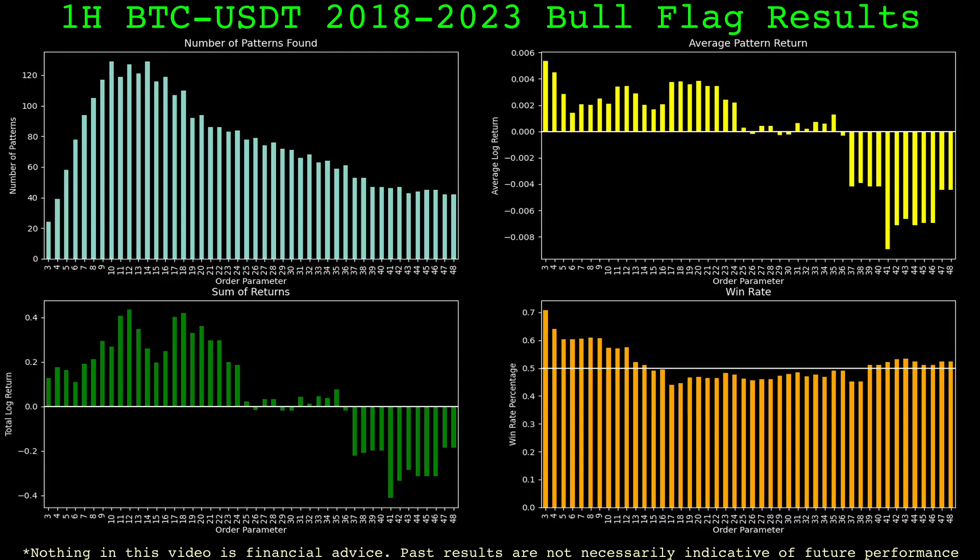Here are the bull flag results. In the top left, we see the number of bull flags found at each order parameter. In the top right, we see the average log return, which is roughly the percentage change, the amount the price changes over the next flag width after a pattern is detected. In the bottom left, we have the total log return, the sum of returns at each order parameter. And the bottom right is the win rate of simulated trades. We can see at the lower order parameter values, the average return is consistently positive. So smaller flags worked well, while larger flags didn't perform. The win rates on the lower values of the parameter are also quite attractive. Several are above 60%. The win rates should be interpreted along with the number of patterns, as it is easier to achieve a higher win rate with a lower count of patterns.